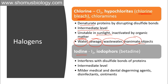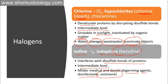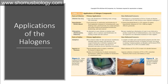Iodine can be used as iodophores like betadine. Betadine is iodine combined with an iodophore, used as an antiseptic agent for wounds — either as a liquid or ointment for topical use. It interferes with disulfide bond formation of proteins, has intermediate level of activity, and is milder for medical and dental use. Applications of halogens are listed in detail — for example, povidone-iodine sponge is used prior to surgical incision.